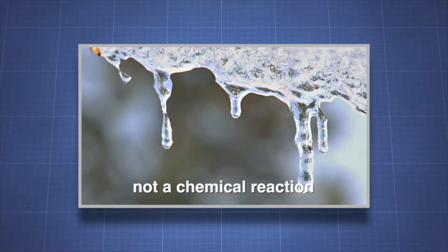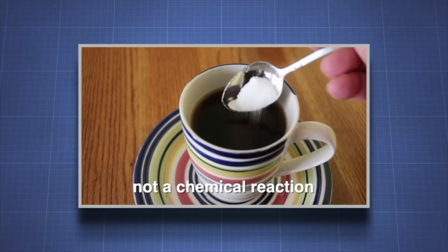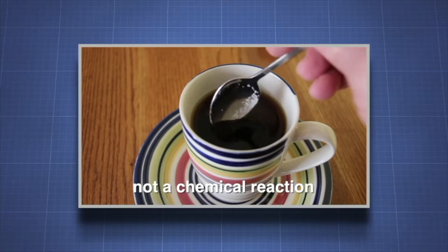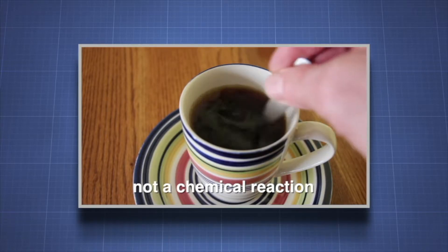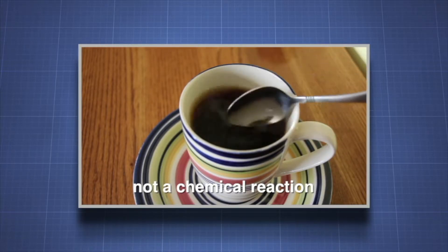But substances can change without a chemical reaction, like ice melting into liquid water or sugar dissolving in a cup of coffee. So how do you know if a chemical reaction has taken place? We need to look at how substances change for signs of chemical reactions.